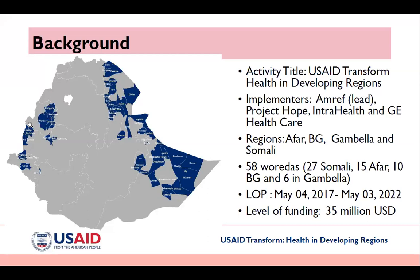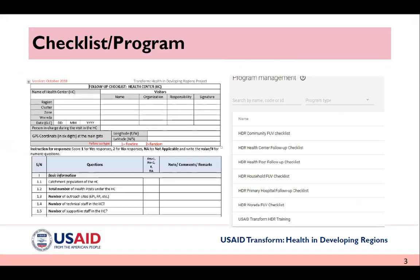The project is implemented by AMREF, which leads a consortium including Project Open Trials and GE Healthcare. We work in 56 districts across these four regions, starting in 2017 and ending in 2022. We use the DHIS2 event program to monitor standard of care in these regions. The project focuses mainly on maternal and child health — monitoring quality of care in maternal and child health services.